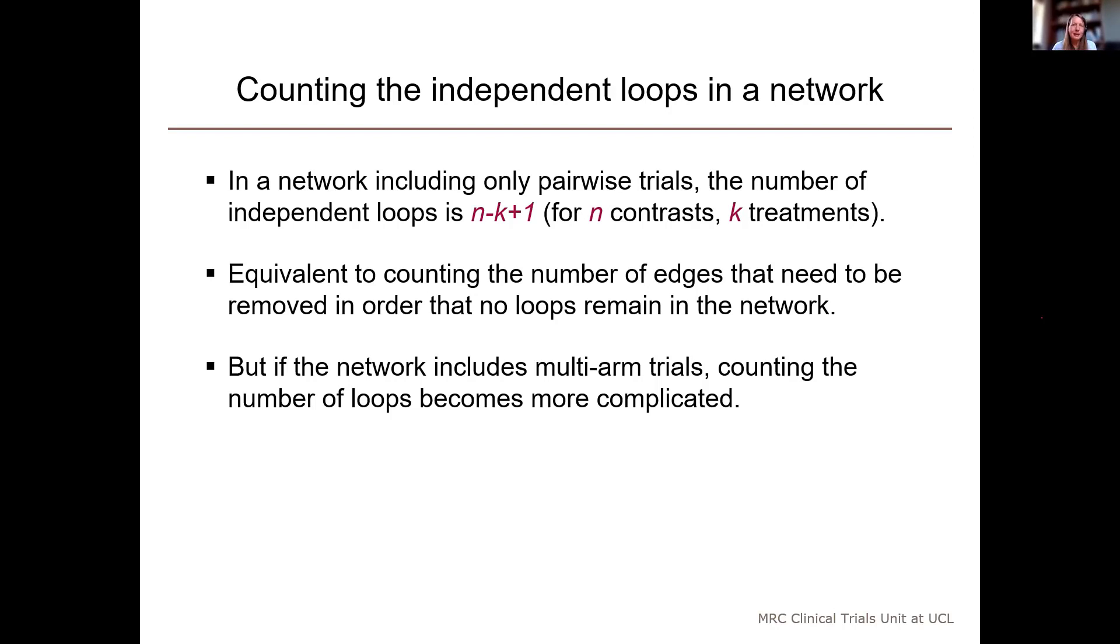In a network which only includes pairwise trials, if the network includes k treatments and n contrasts which are informed by trial data, then the number of independent loops is n minus k plus one.